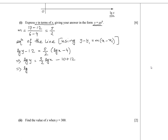We can write log y equals log x to the power 5 over 2, because the coefficient of a log term can become the power of its argument. Then plus 2. That 2 can be written as 2 times log 10, since log base 10 of 10 is 1. So log y equals log x to the power 5 over 2 plus log 10 squared.